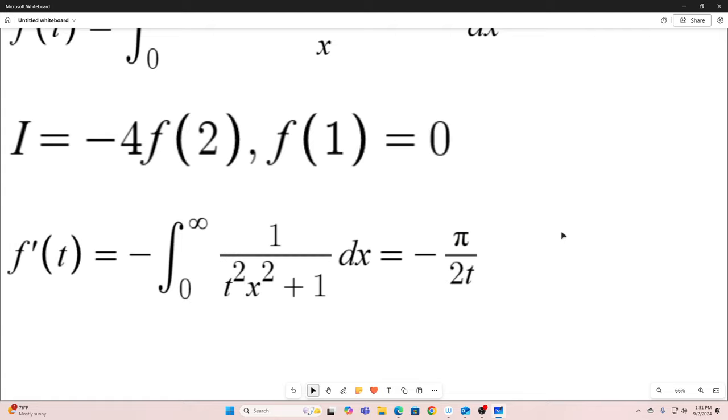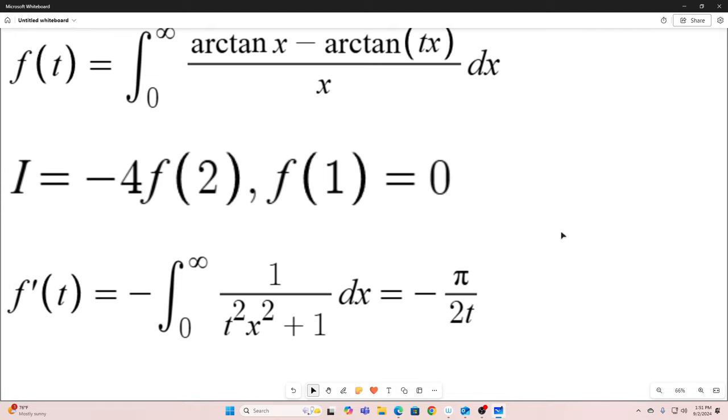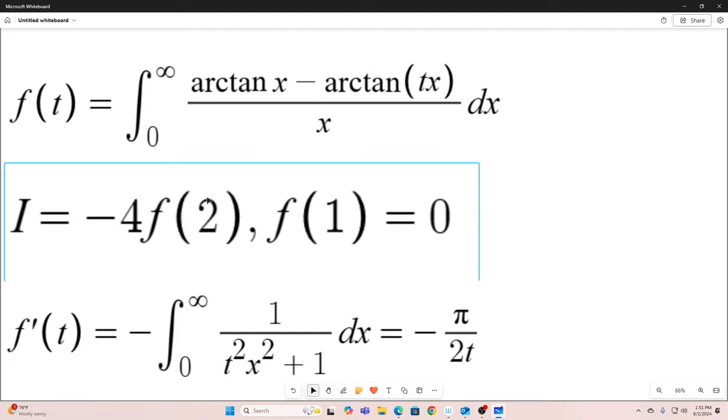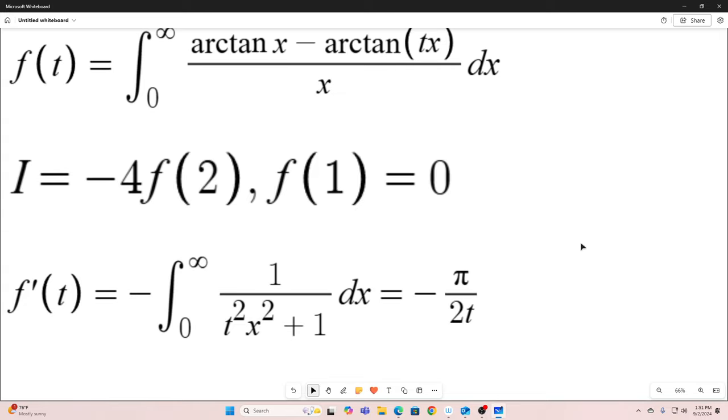All right. Now we use the Leibniz rule for differentiation under the integral sign. Basically all that means is we can just find f prime of t by taking the partial with respect to t of this integrand right here and leaving the rest alone. And if you take the partial with respect to t of that integrand, this is what we have. We have f prime of t is equal to negative integral 0 to infinity of 1 over t squared x squared plus 1 dx.